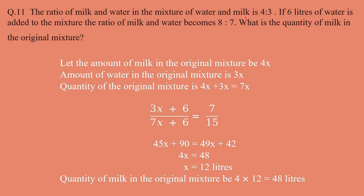Next question: The ratio of milk and water in a mixture is 4:3. 6 liters of water is added and the ratio becomes 8:7. What is the quantity of milk in the original mixture? Let the milk in the original mixture be 4x and water be 3x, giving a total of 7x. After adding 6 liters of water, the new water is 3x + 6 and the new total mixture is 7x + 6. Setting up: (3x + 6) / (7x + 6) = 7/15.